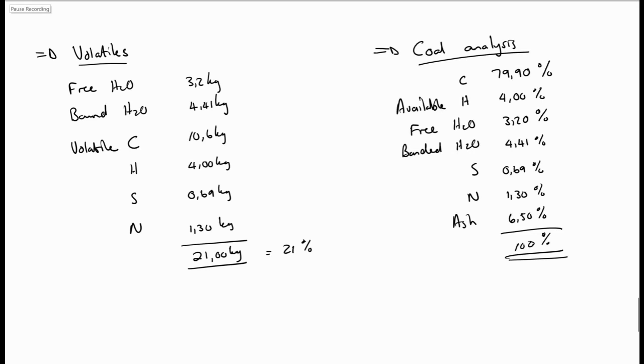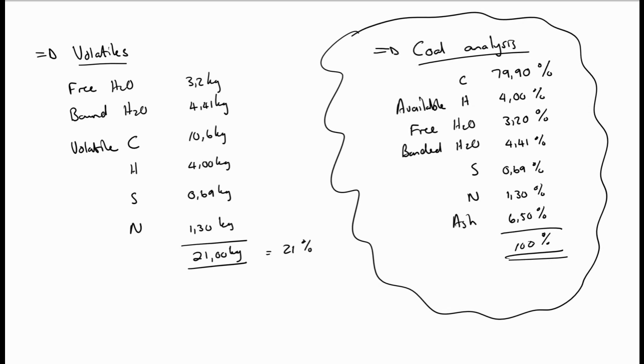And we can now calculate the total coal analysis where we have all the carbon at 79.9%, the available hydrogen as 4.0%, the free water 3.2% and bound water at 4.41%, the sulfur at 0.69%, the nitrogen at 1.30% and the ash at 6.5%. If we add this all up, it adds up to 100, which means we have not made a mistake. Now this analysis is in the end the analysis we are going to use to calculate what happens when we combust the coal to get energy. And that will be in the next lecture.